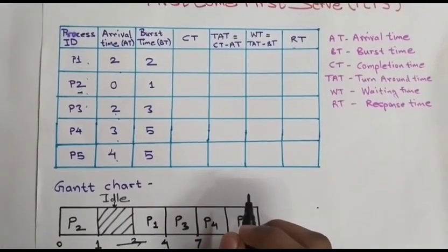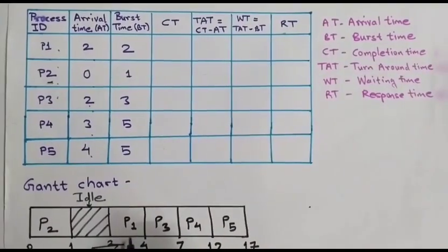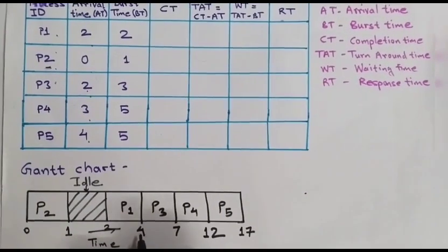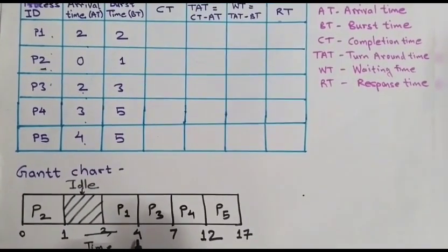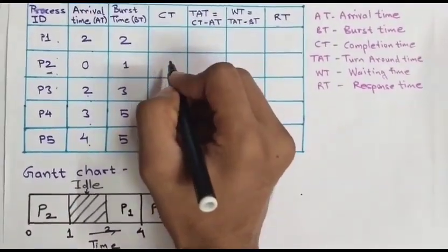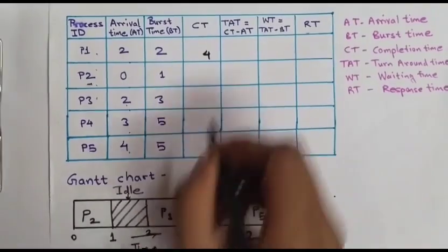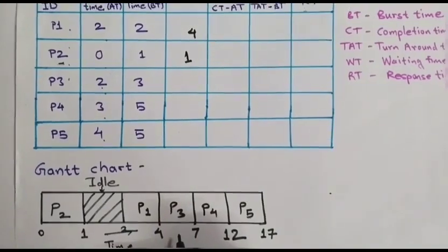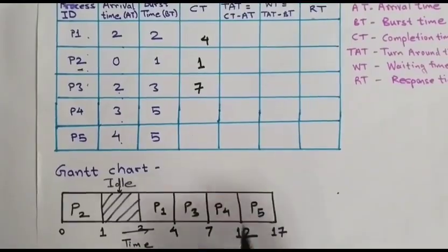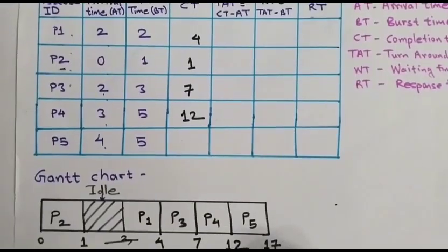Now to write completion time of all the processes. Completion time means it is the time at which the process has been terminated. Now for P1, at what time P1 was terminated? P1 has been terminated at time 4. So 4 is the completion time of P1. We have to check its right hand side. P2 is 1. P3 has terminated at 7. P4 at 12. And P5 at 17.